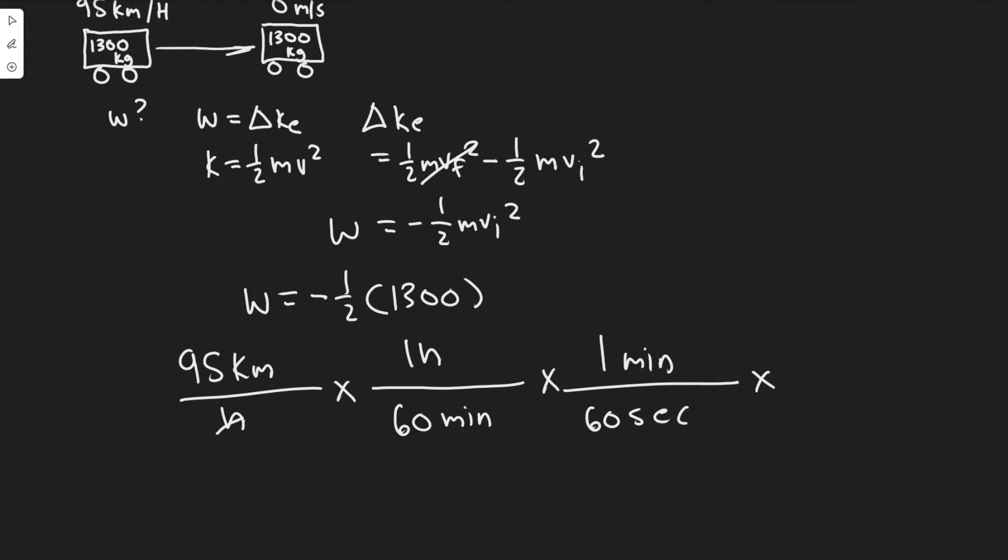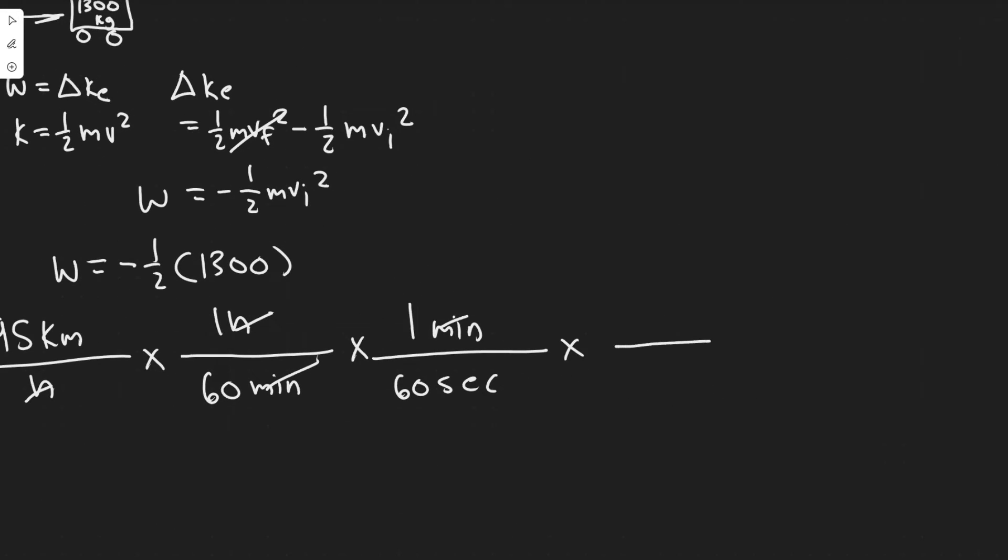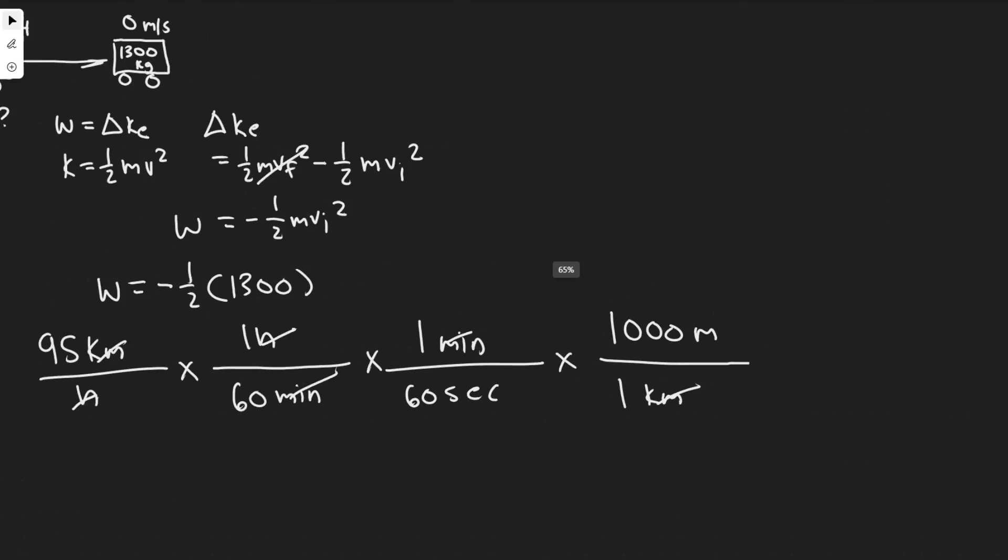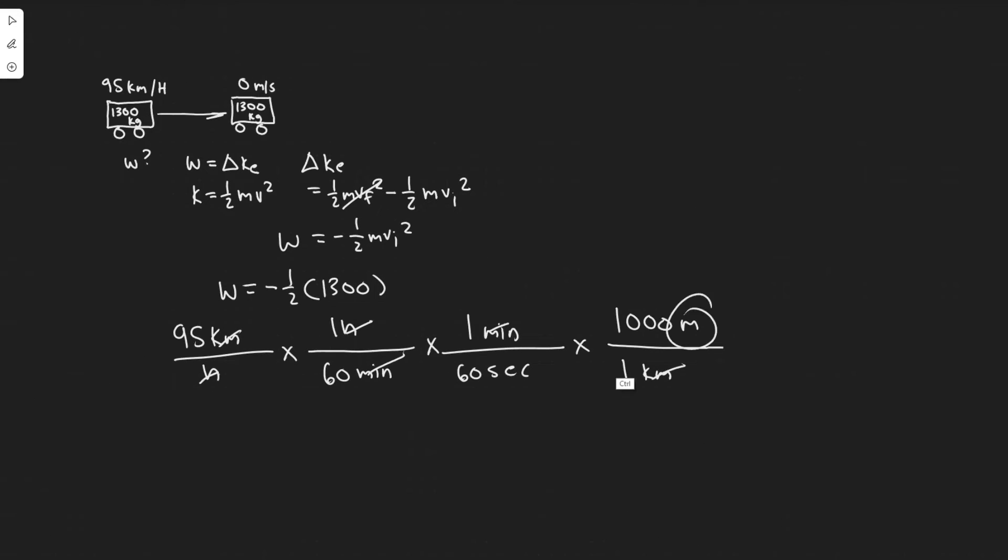So we have kilometers per second now, but we need meters per second. So go ahead and fix that. One kilometer we know is 1,000 meters. So now the kilometers cancel. And now we have it in meters per second.